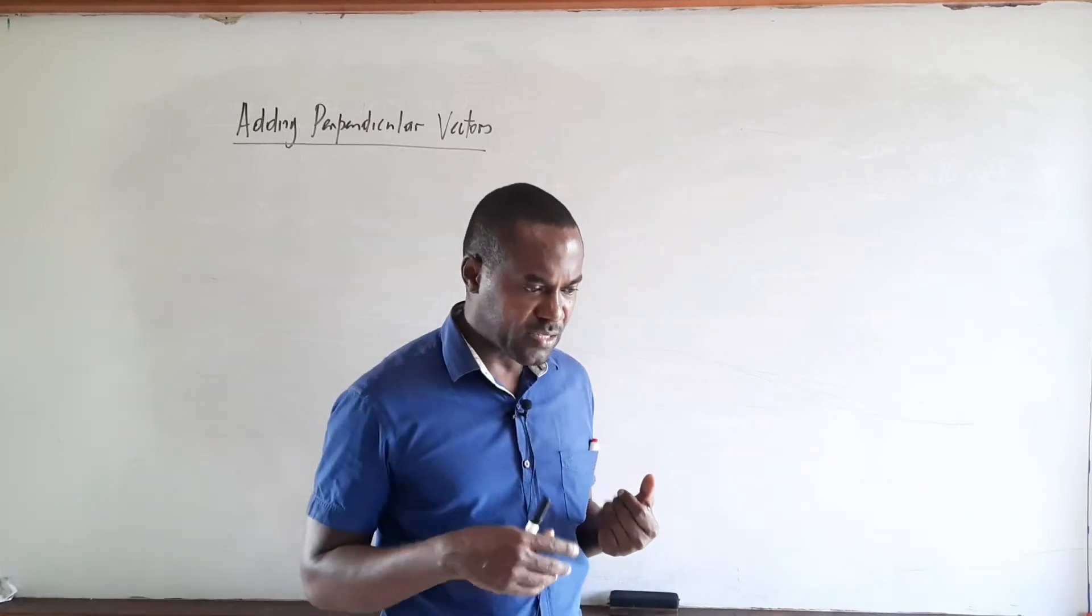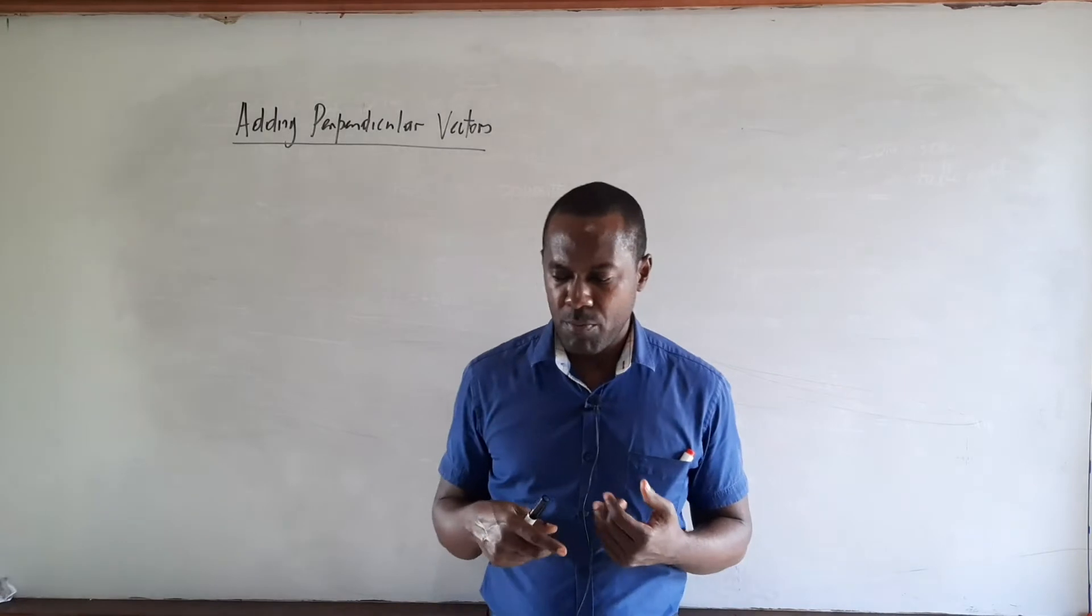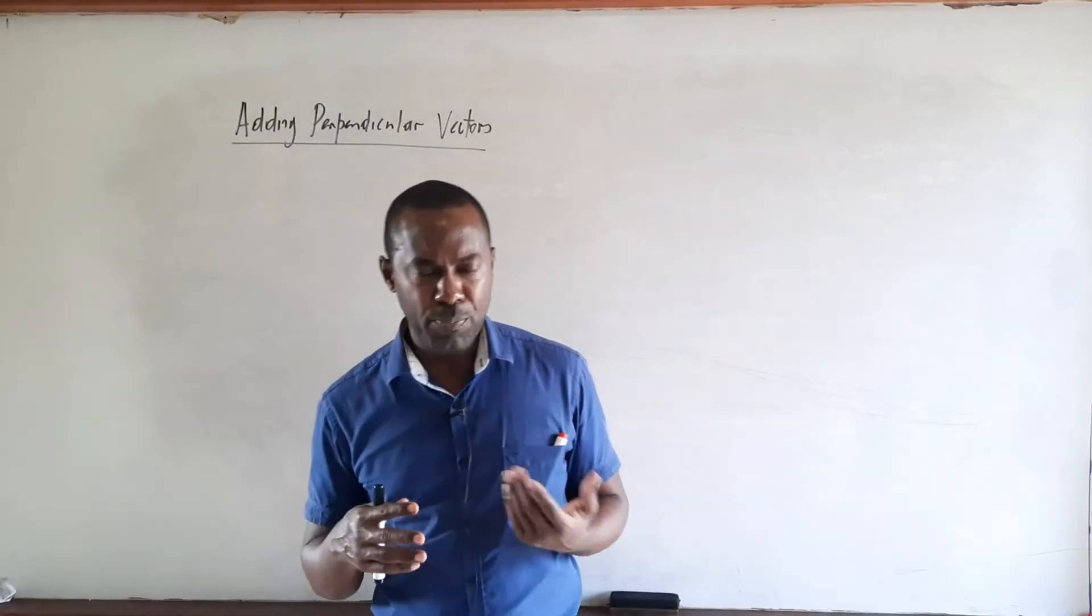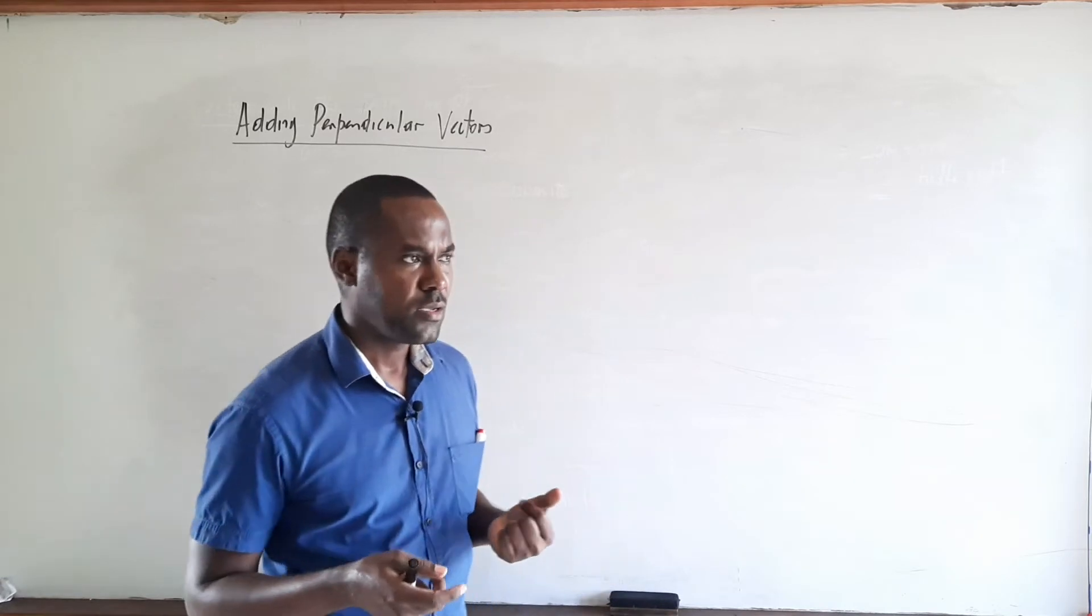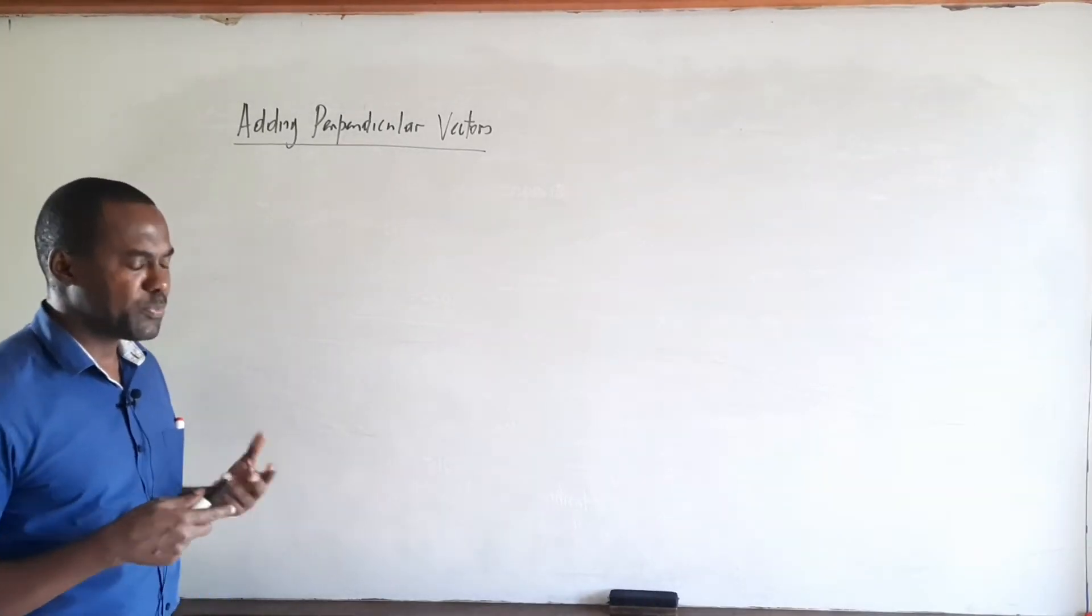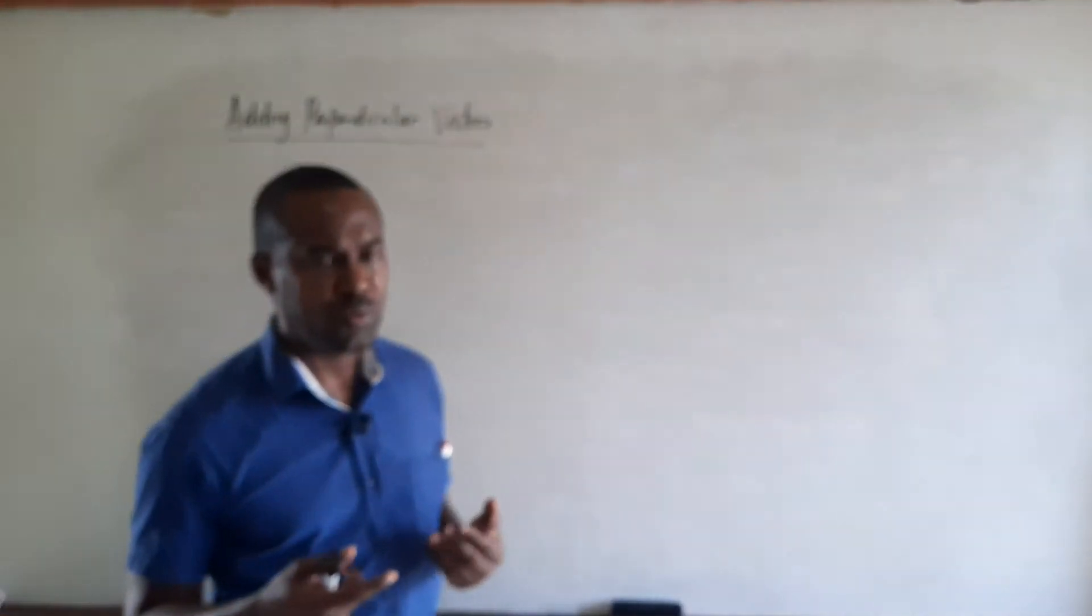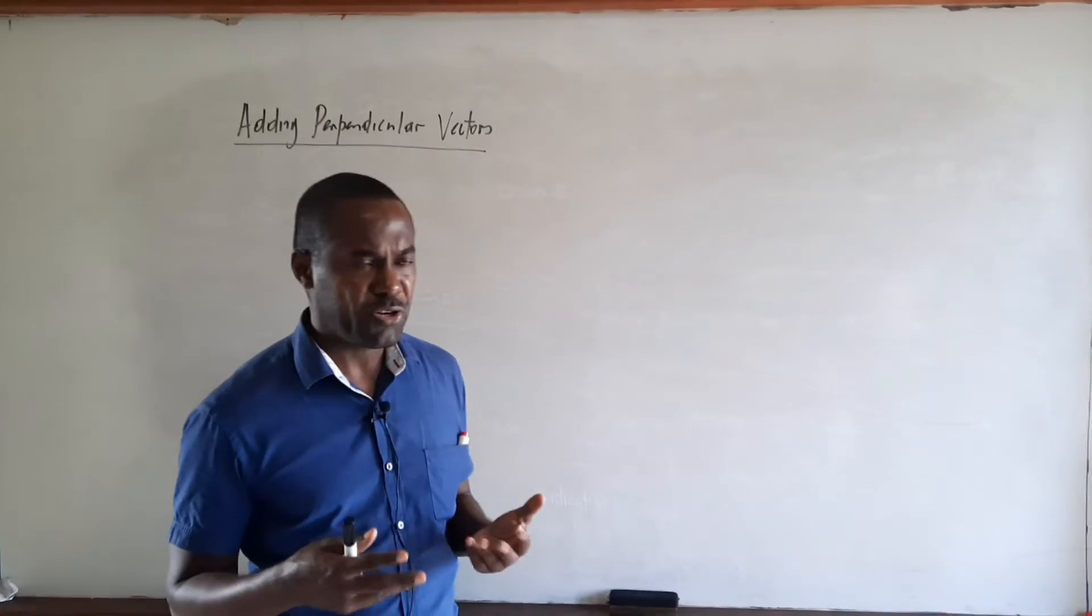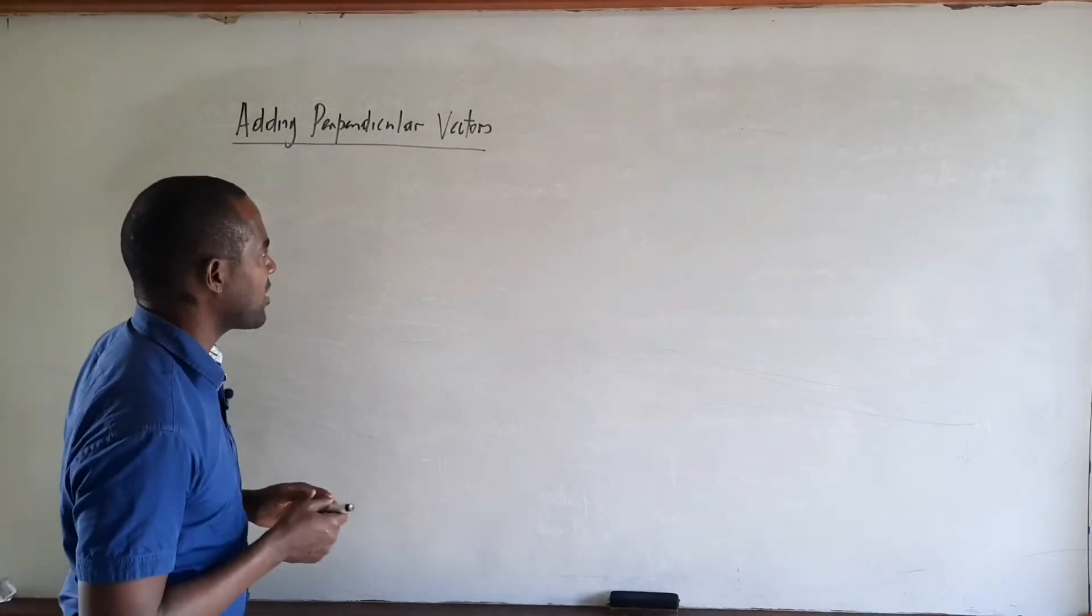Now the parallelogram law basically implies that scale drawing would have been used, but at this level we won't be applying scale drawing but we'll be using more mathematical methods. If two vectors are perpendicular then typically we will use Pythagoras' theorem to calculate their magnitude and a trigonometric ratio to find their direction. So let's look at a quick example.